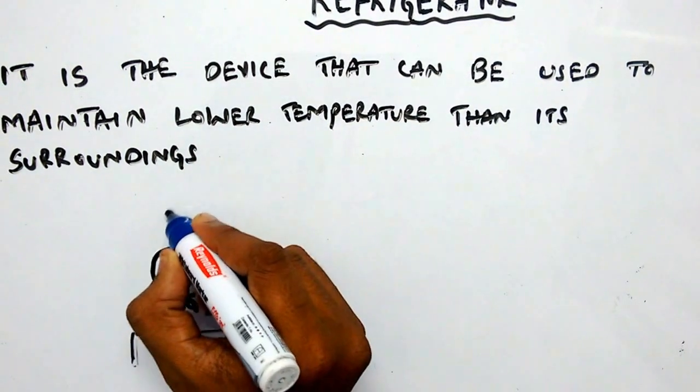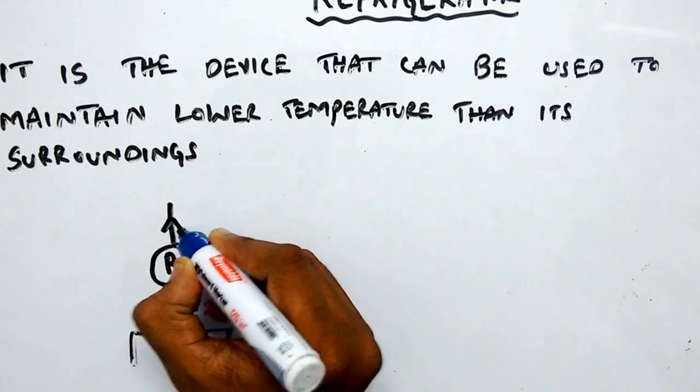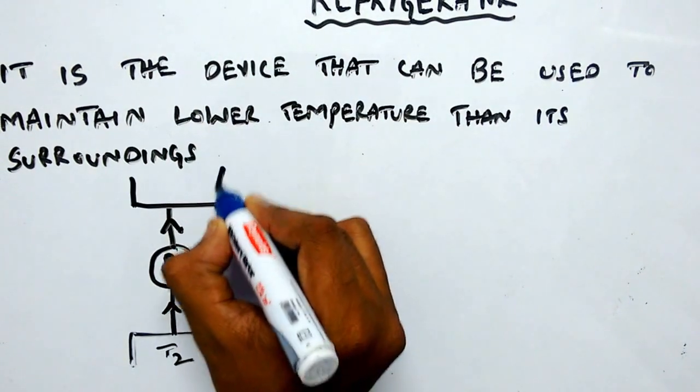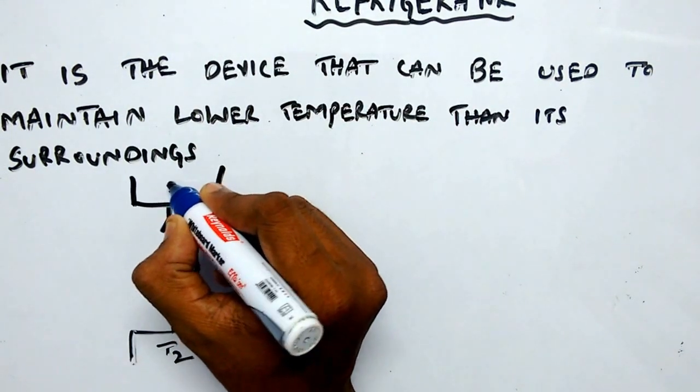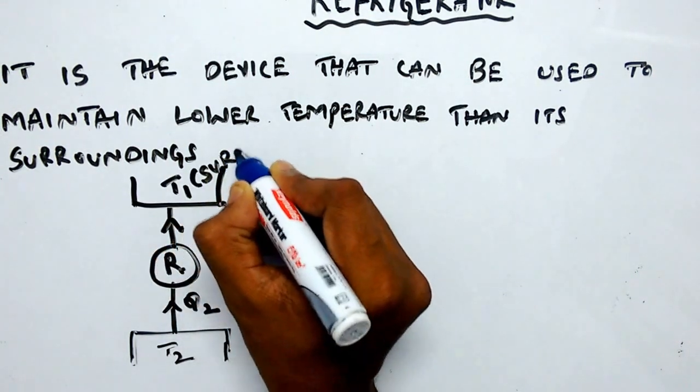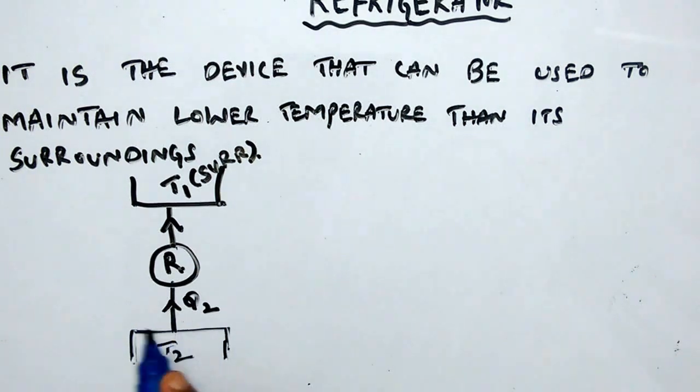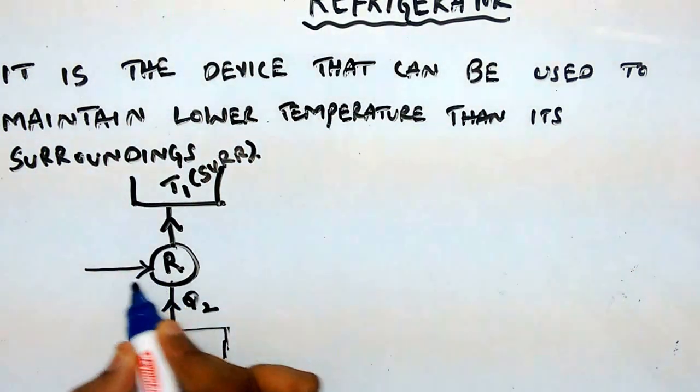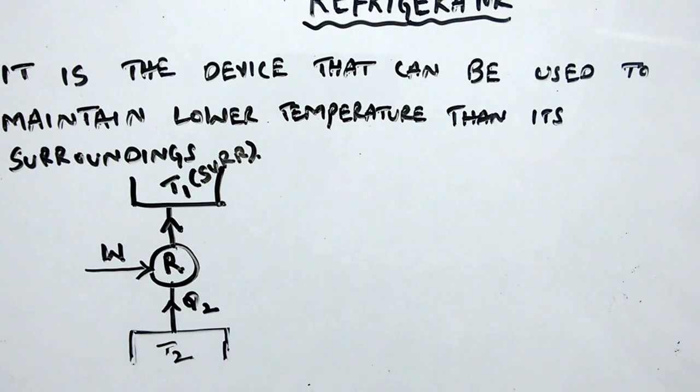And reject certain amount of heat to its surroundings which is maintained at temperature T1. For doing this, we should supply some amount of work input.